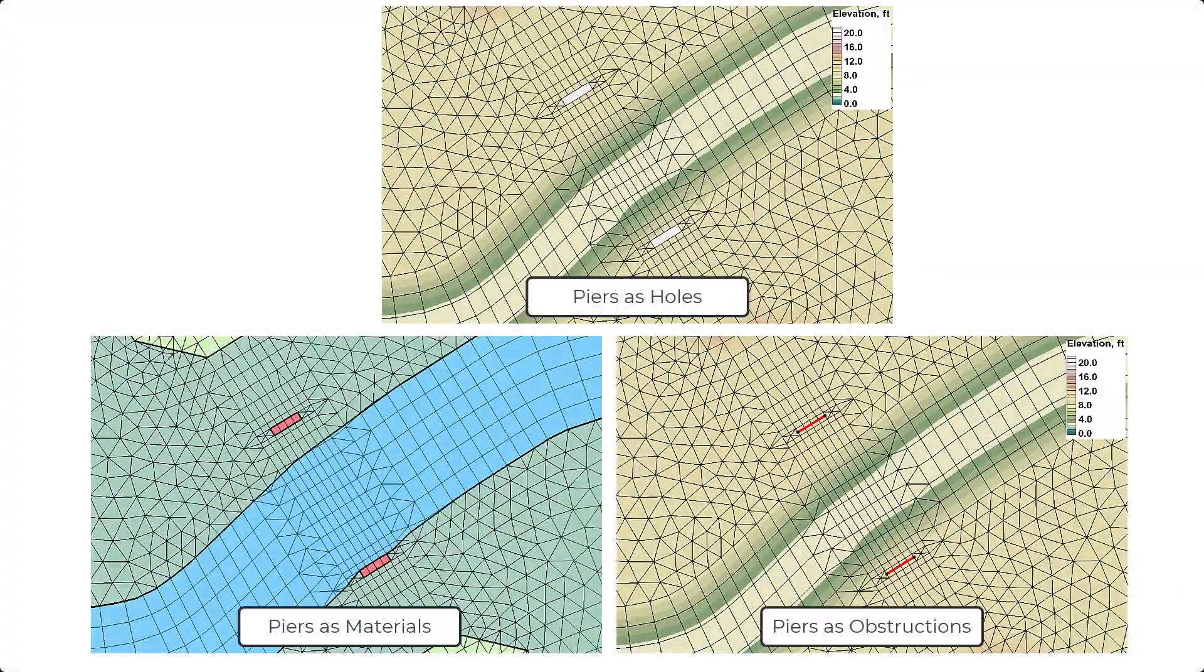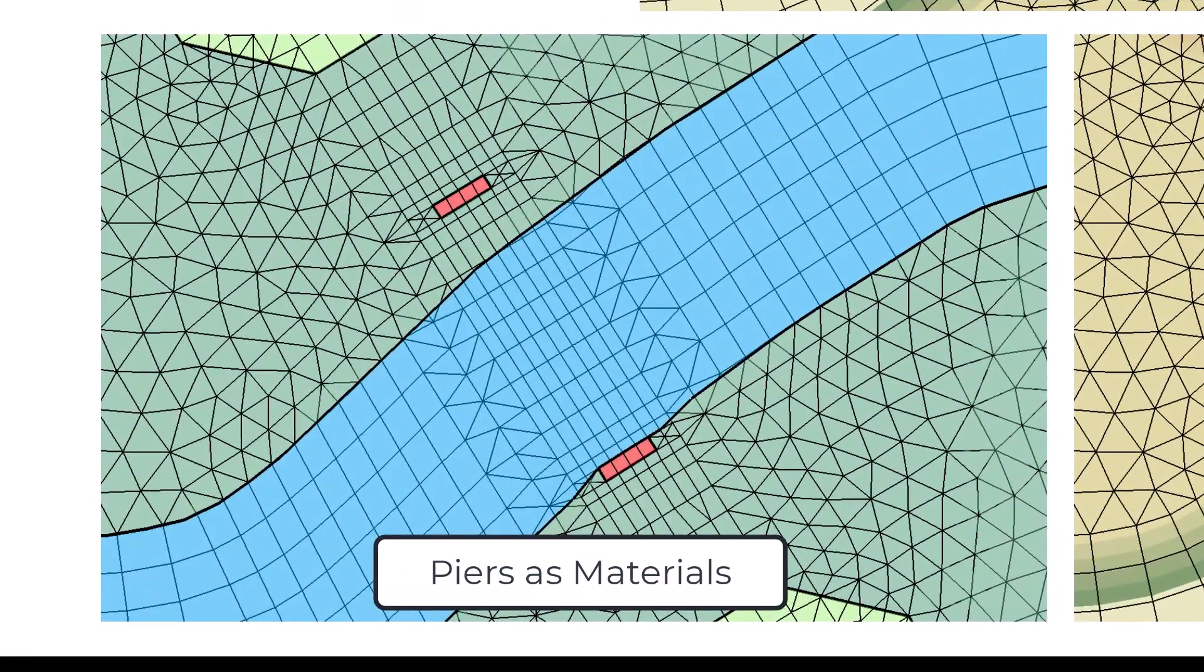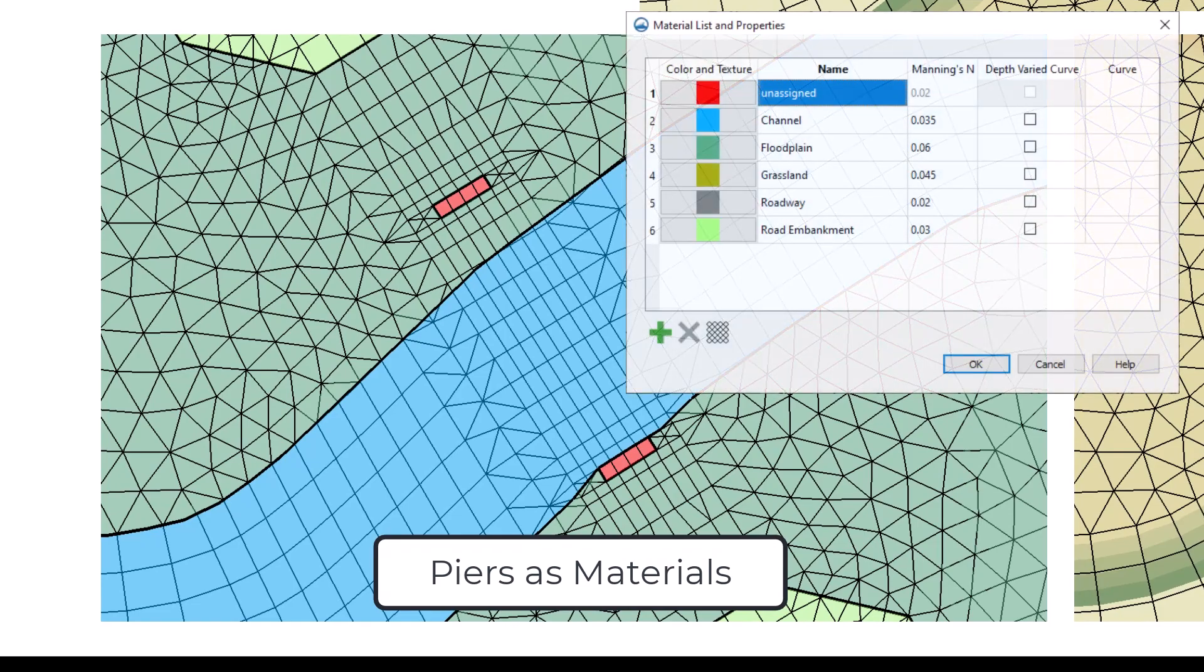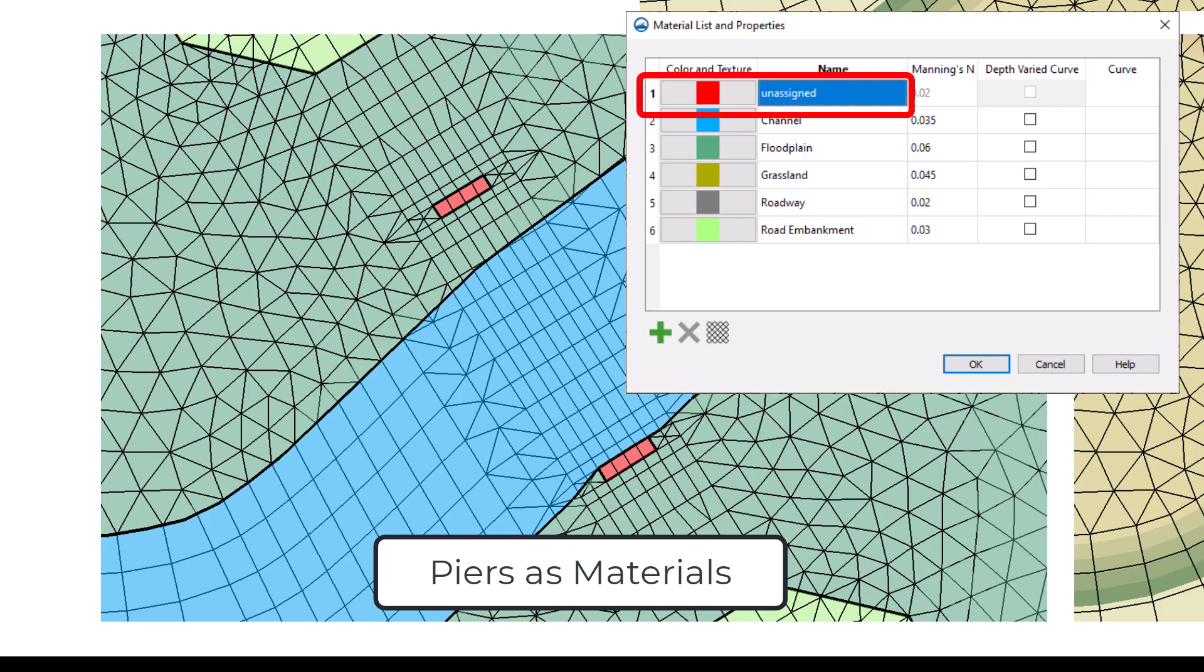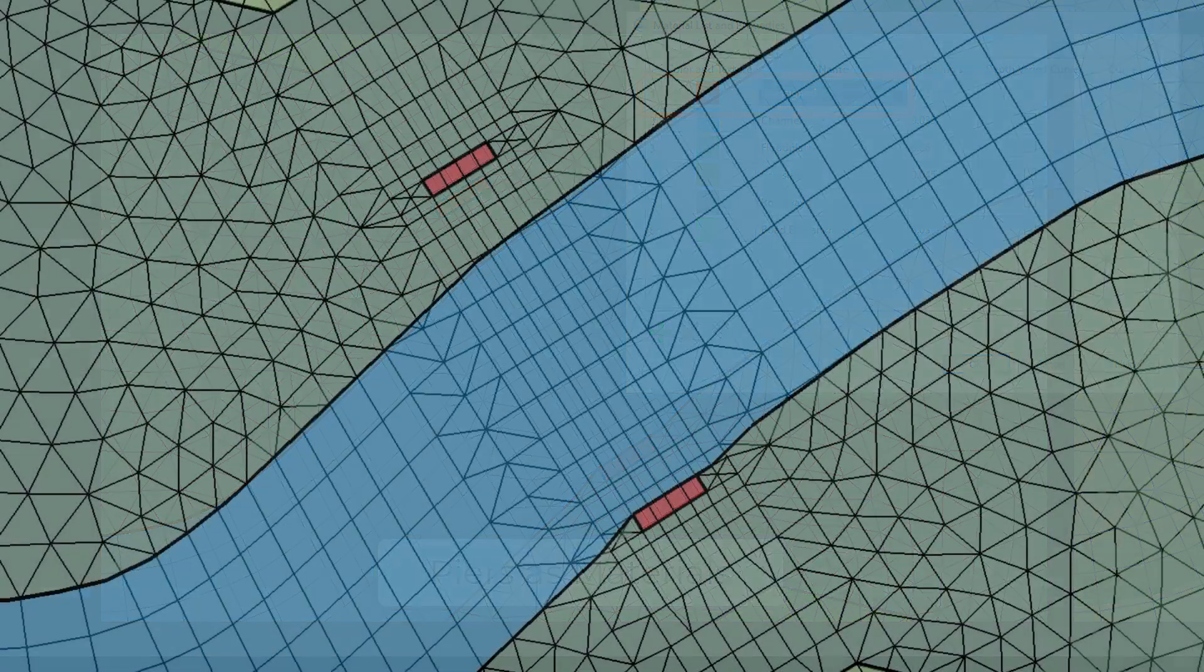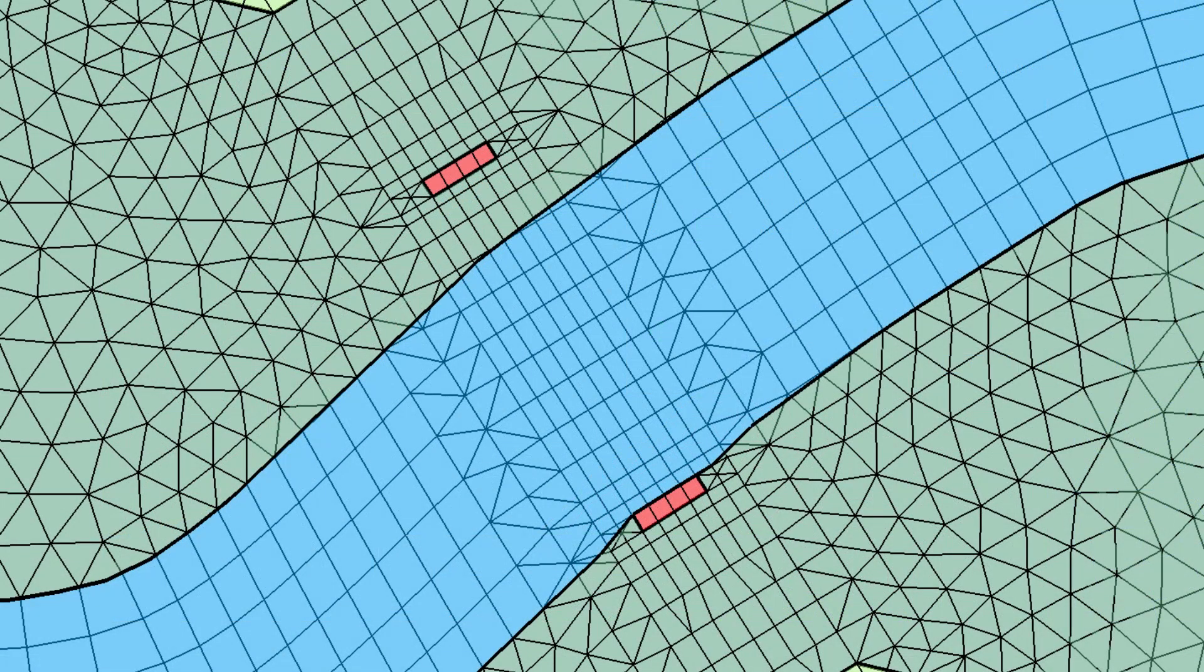The second method is similar except instead of making a hole in the mesh, an unassigned material type is used to represent the pier. This informs the model not to include any unassigned elements in calculations.